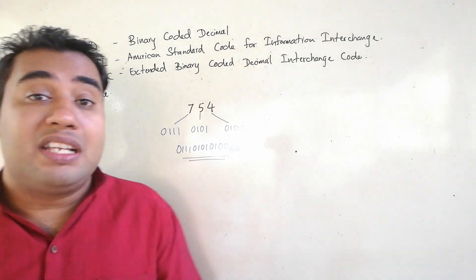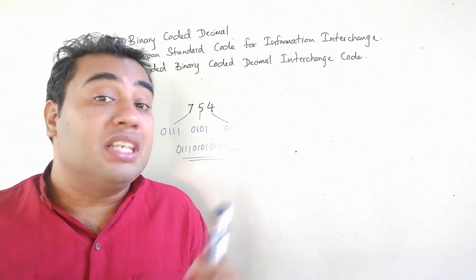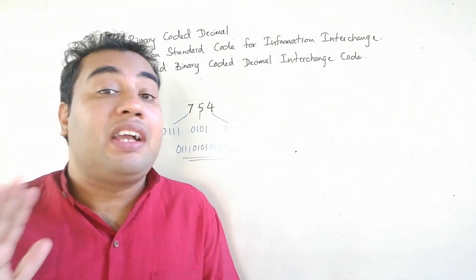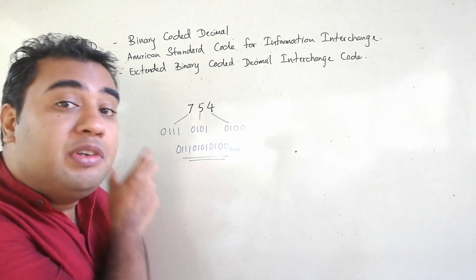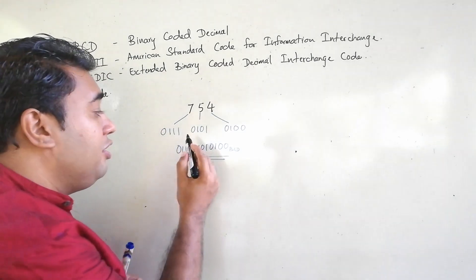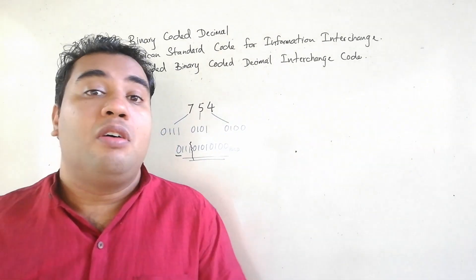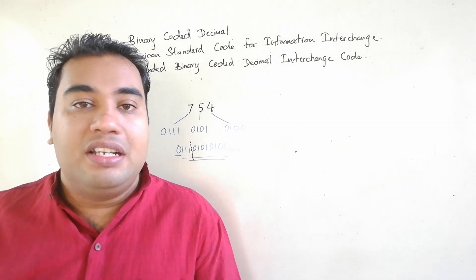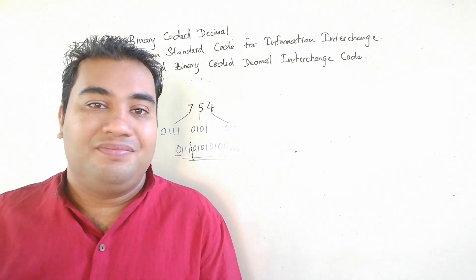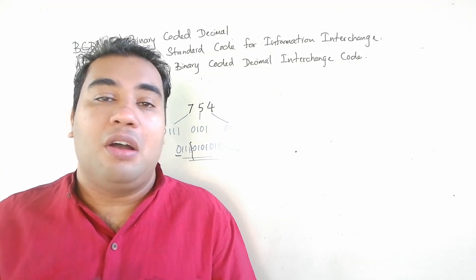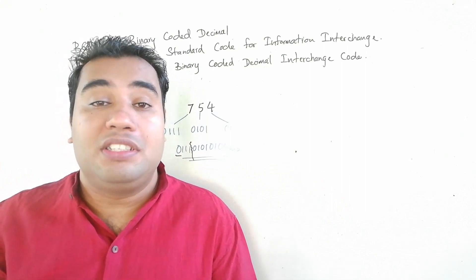In hexadecimal-to-binary conversion we would ignore a leading zero, but in BCD we cannot ignore it because it is a standard. This is how the computer sees the value 7 — if you remove that first bit, the computer won't recognize it as the digit 7. As it is a standard, you cannot ignore that leading bit. That is how the BCD coding system works.